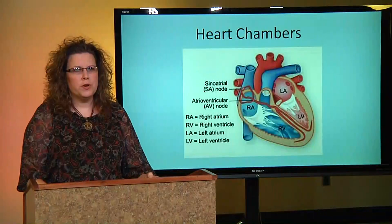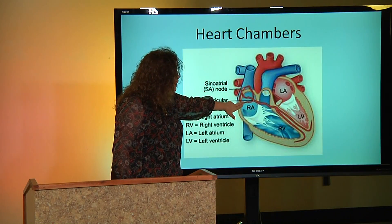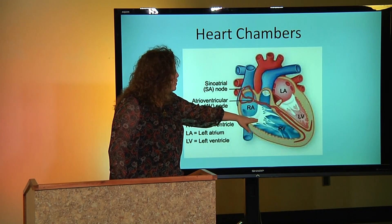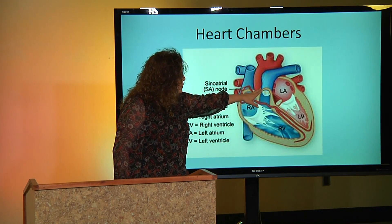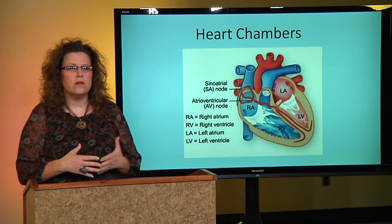Next, we're going to talk about the heart chambers. There are four of them: the right atrium, located in the top right side of the heart; the right ventricle; the left atrium; and the left ventricle. Think of the heart as four different rooms or chambers. The two upper chambers are called the atrias and the two lower are called the ventricles.